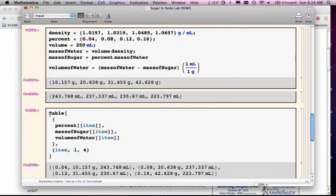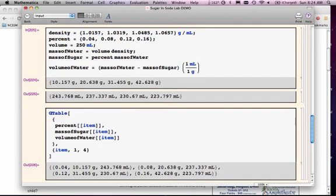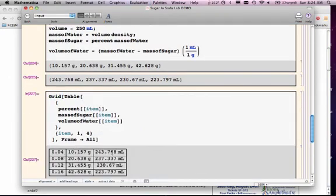Sort of still pretty ugly. I'm going to show you a way to cheat here. I'm going to type in grid in front of the word table. And at the very end of that, I'm going to put a comma, and I'm going to say frame all.